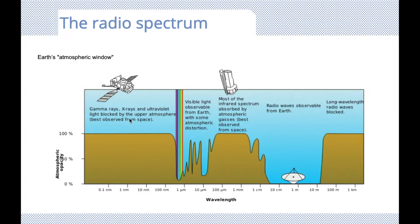In order to do observations at those wavelengths, we have to be above the atmosphere. Space astronomy has become fairly important for multi-wavelength astronomy. With space telescopes mounted on satellites, we are able to do gamma ray, X-ray, and ultraviolet observations. Then you have the small visible region, where optical works — you can actually see the colors there as well.